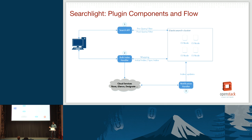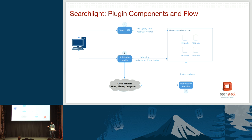The main parts of a plugin are: first the Search API — a plugin implements a pre-query and post-query filter. The pre-query filter lets you specify your own RBAC mechanism as an Elasticsearch query; before any query executes, Searchlight injects that RBAC mechanism so results match exactly what the service would return. The post-query filter lets you strip off data or make it look exactly the way your service would send it back — for example, Glance has property protections, so based on who the user is you want to remove some properties.